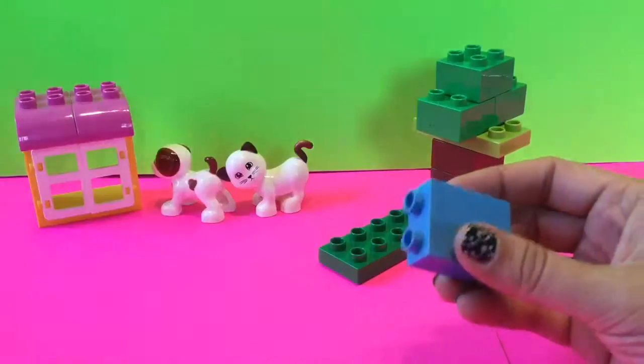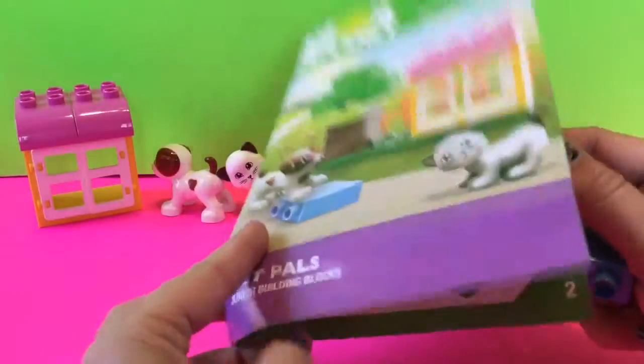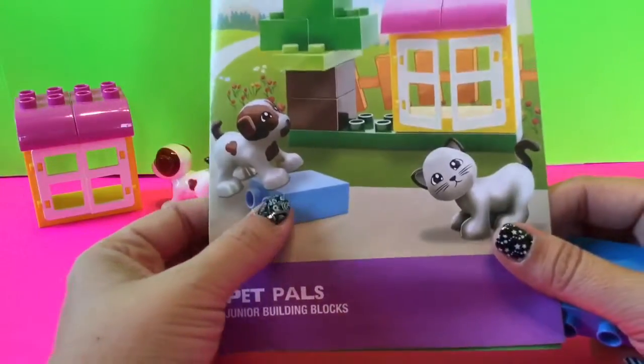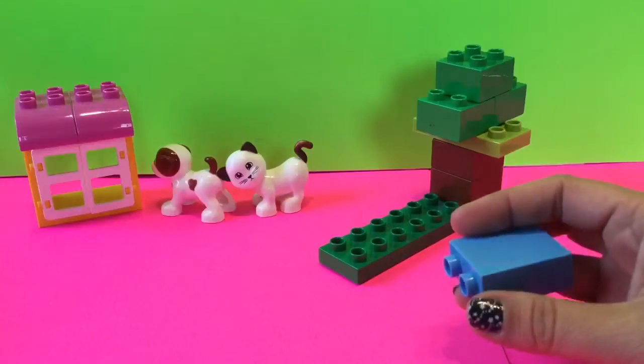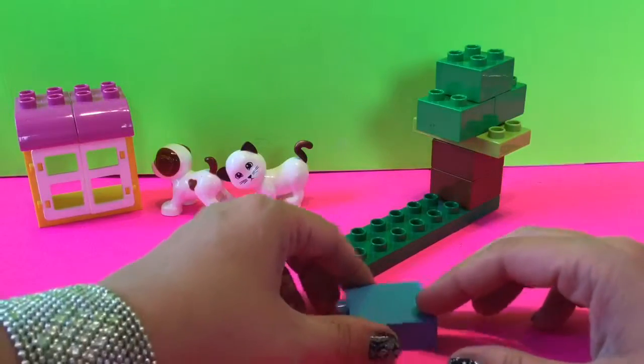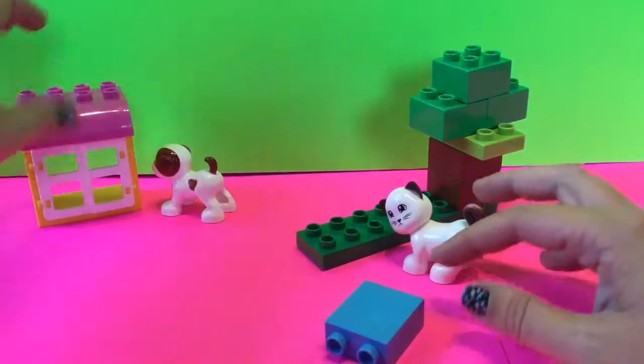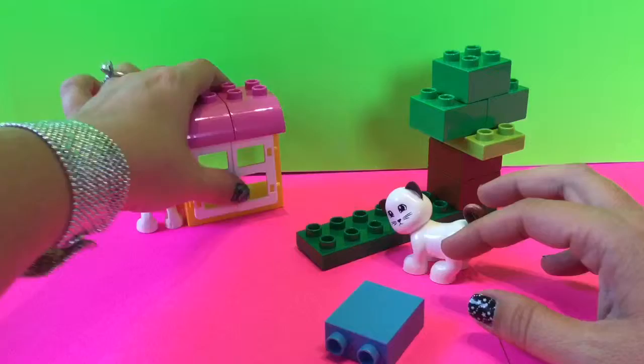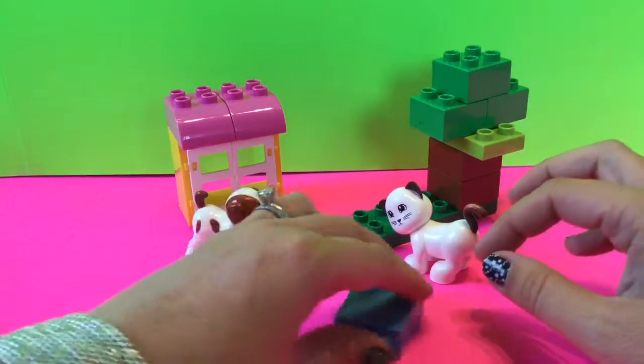We've got this blue piece left and the instructions don't show anywhere for the blue piece, but if you look on the front it just looks like it's a block that the dog or cat can play on. So I'm just gonna have this laying around here. Here's the cat and a little playhouse and here's the dog, so this is our full set.